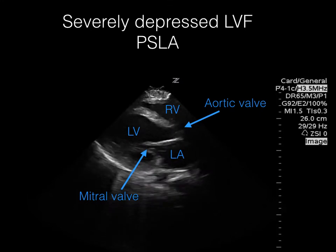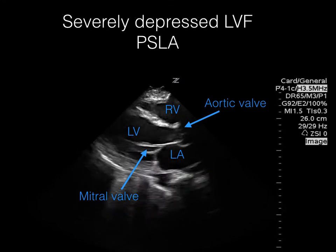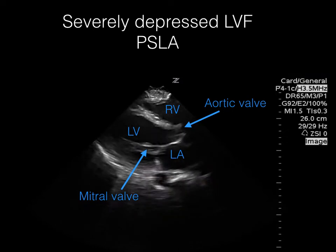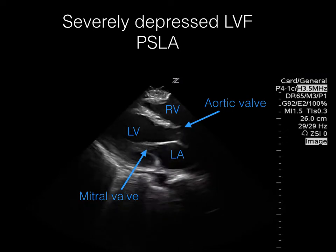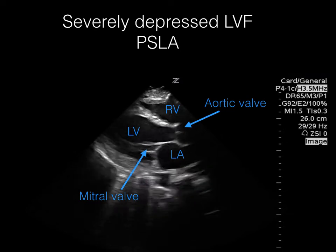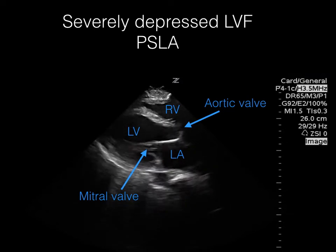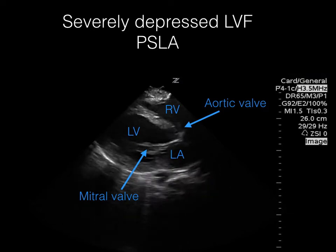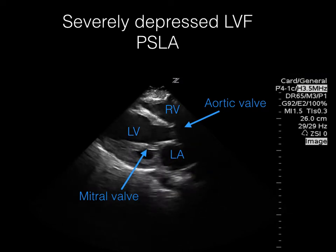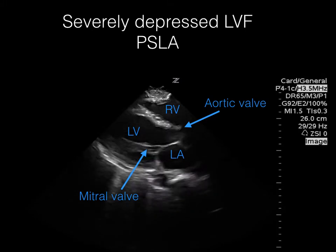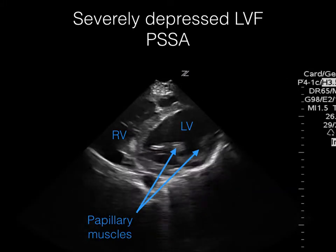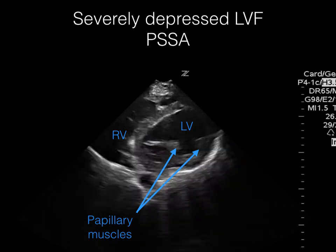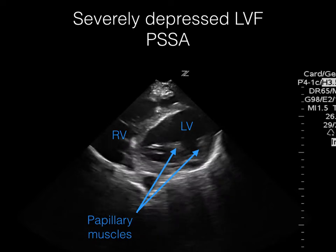Here is a parasternal long axis view. We can see that the anterior leaflet of the mitral valve clearly does not come close to the interventricular wall, and the fractional shortening does not show a significant change in diameter between systole and diastole — certainly less than 30%, measured at the level of the papillary muscles. In this parasternal short axis view at the level of the papillary muscles, we see a fractional shortening of less than 30% between systole and diastole.